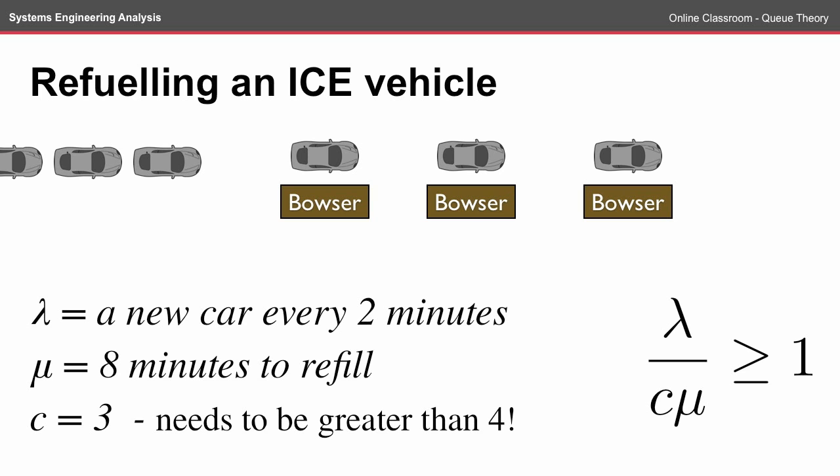you need the arrival rate over the number of channels times the service rate to be greater or equal to 1. And in this instance, it means that we need the number of Bowsers to be greater than 4.